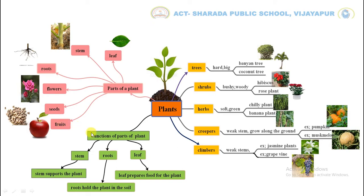Let's move to the functions of parts of a plant. Stem — stem supports the plant. Roots — roots hold the plant in the soil. Leaf — leaf prepares food for the plant. Now let's move to types of plants. There are five types of plants.